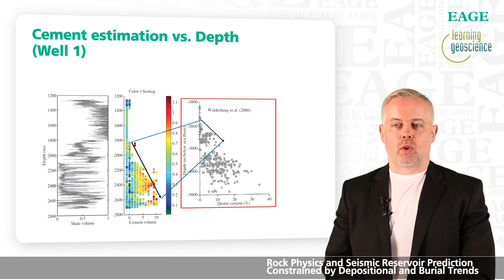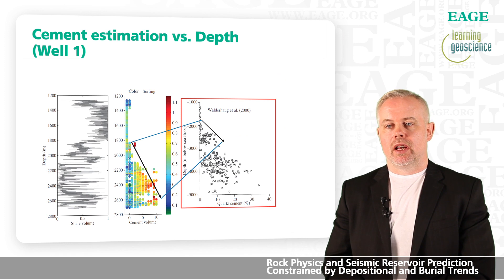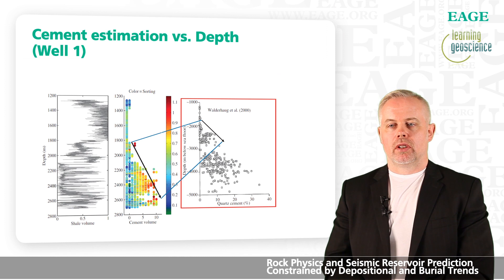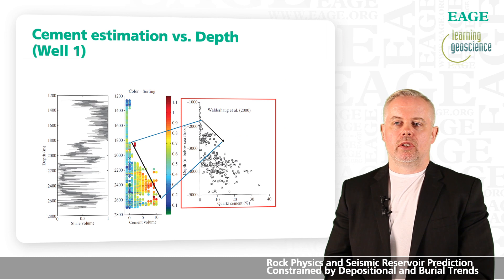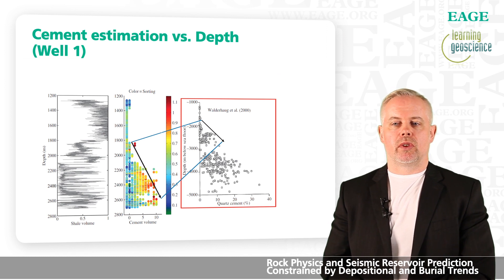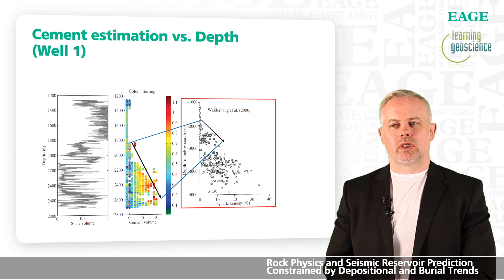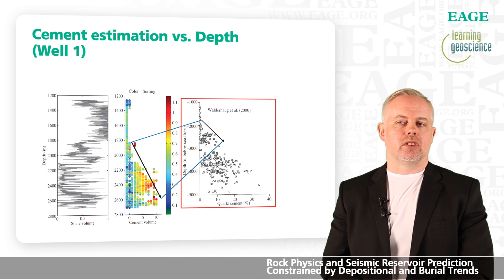We can plot this quantified cement volume back into log space as a function of burial depth. To the left is shale volume versus depth. The top of the reservoir is around 2,100 meters, and from around that depth you see an increase in cement volume from close to zero, increasing up to 10% within a few hundred meters — consistent with published literature showing that quartz cementation starts around 2 km depth and increases with burial depth.